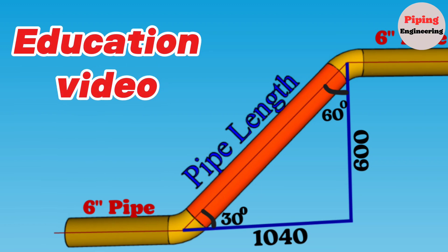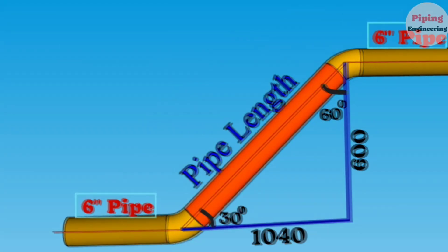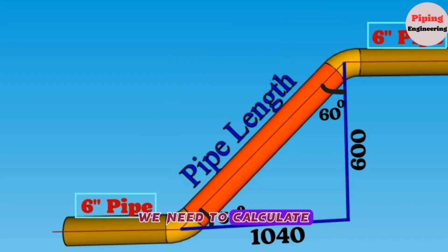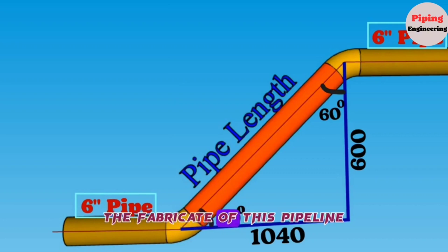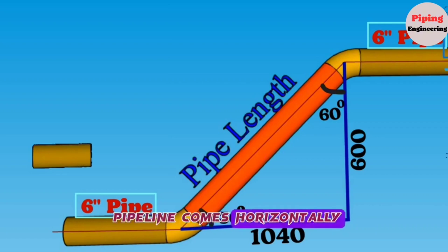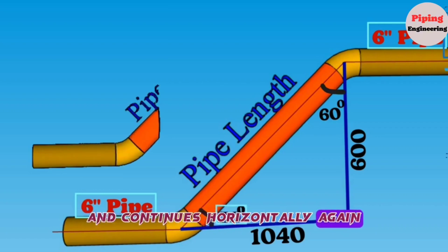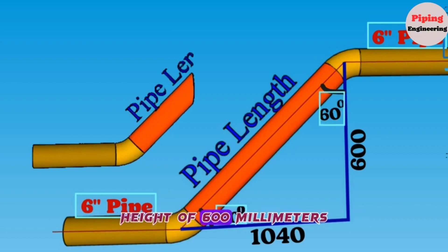We prepared this video according to a 6-inch pipeline. We need to calculate the length of the red color 6-inch pipe piece used in the fabrication of this pipeline. As you see, the pipeline comes horizontally, then goes up at a 30-degree angle and continues horizontally again at a 60-degree angle at a height of 600 millimeters.